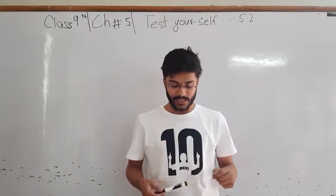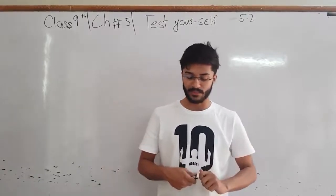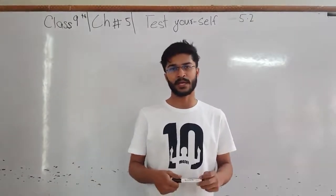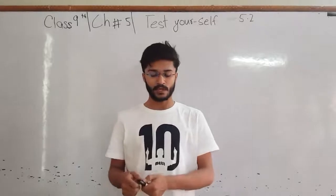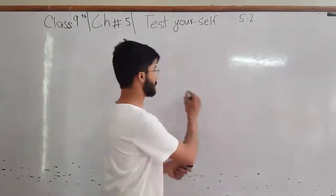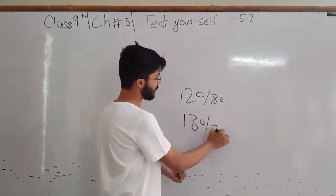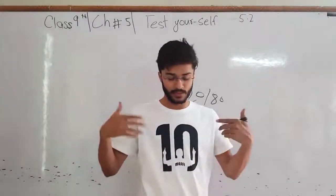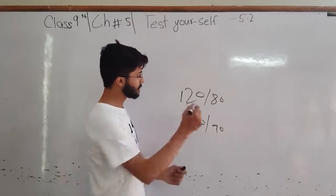Now, blood pressure is measured using digital devices. The pressure is measured in torr. A normal blood pressure reading is 110 over 80. A reading of 130 over 90 is considered high. In our case, due to resistance and tension, constant blood pressure changes can occur.